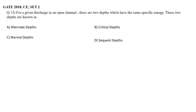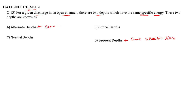Let's solve a question from GATE 2018 Set 2, Question 13: For a given discharge in an open channel, there are two depths which have the same specific energy — these depths are known as what? Sequence depths? No — sequent depths have the same specific force. Alternative depths will have the same specific energy. What is critical depth? It is the depth corresponding to minimum energy, E minimum. And normal depth is the depth of flow in a channel when flow is uniform.